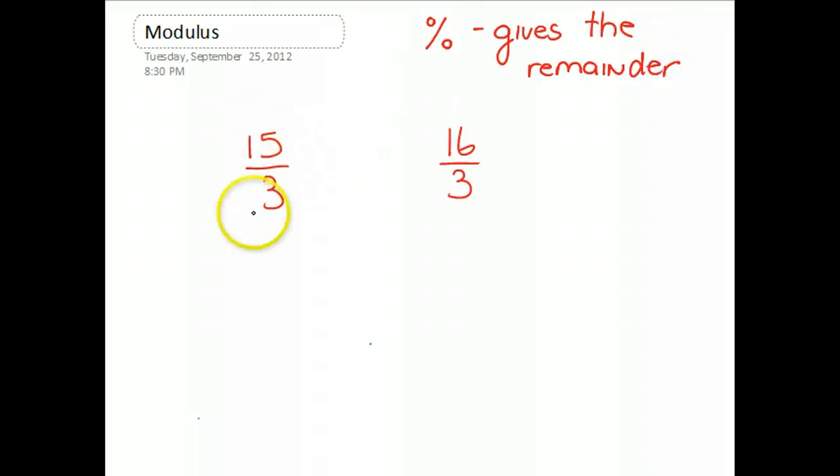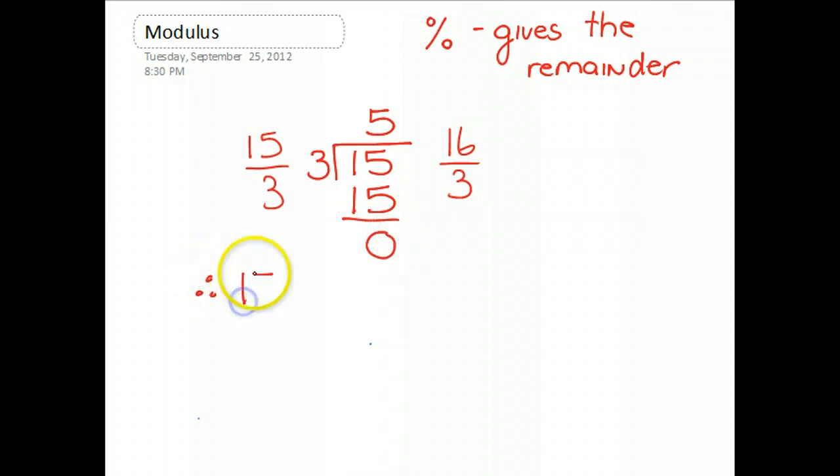So let's do some long division here. 15 divided by 3 can be written as 15 divided by 3. We know that 3 goes into 15 five times, so 3 times 5 is 15, and we get a value of 0. So therefore, if I was to say 15 mod 3, my answer would be 0.